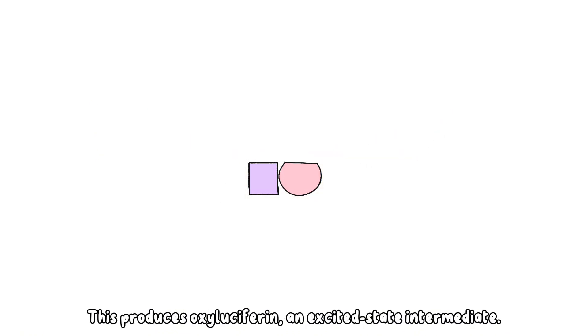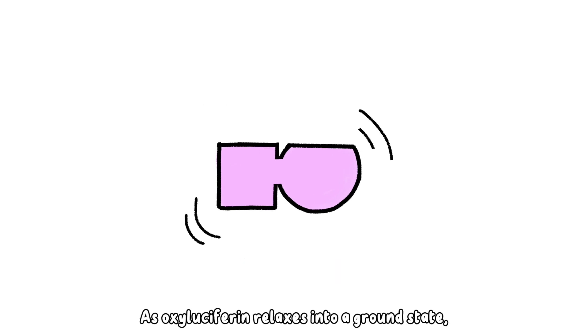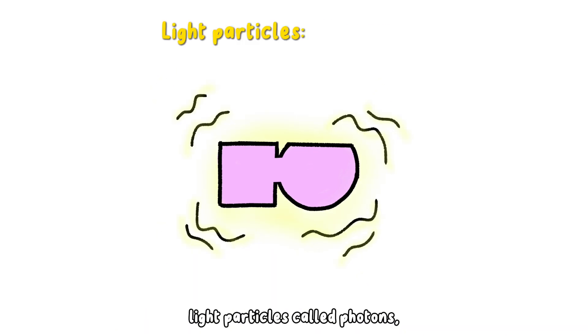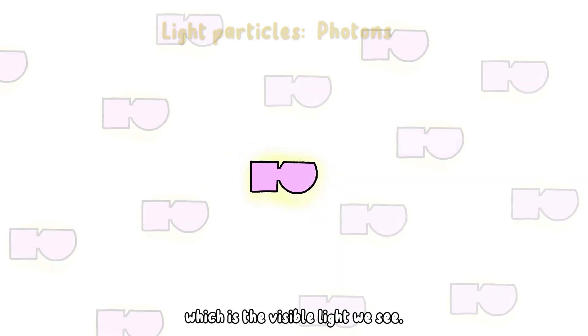This produces oxyluciferin, an excited state intermediate. As oxyluciferin relaxes into a ground state, it releases its excess energy in the form of light particles called photons, which is the visible light we see.